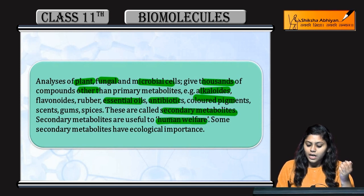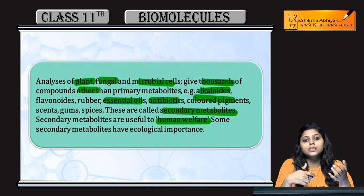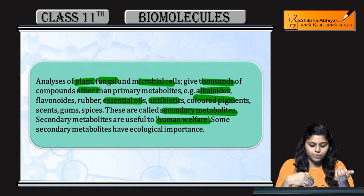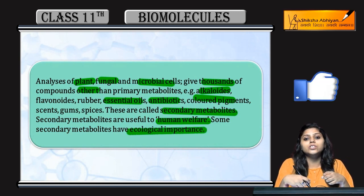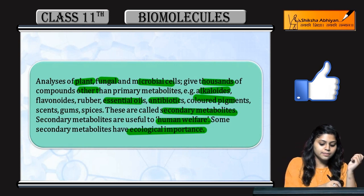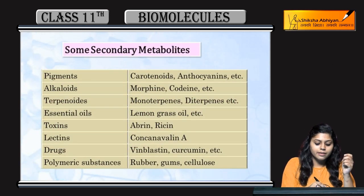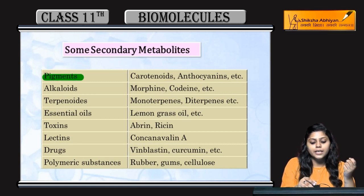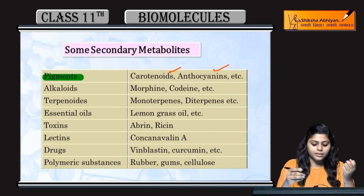Secondary metabolites are useful for human welfare because they are used in our daily lives. Secondary metabolites also have ecological importance. Some secondary metabolites include pigments such as carotenoids, anthocyanins, and many others.